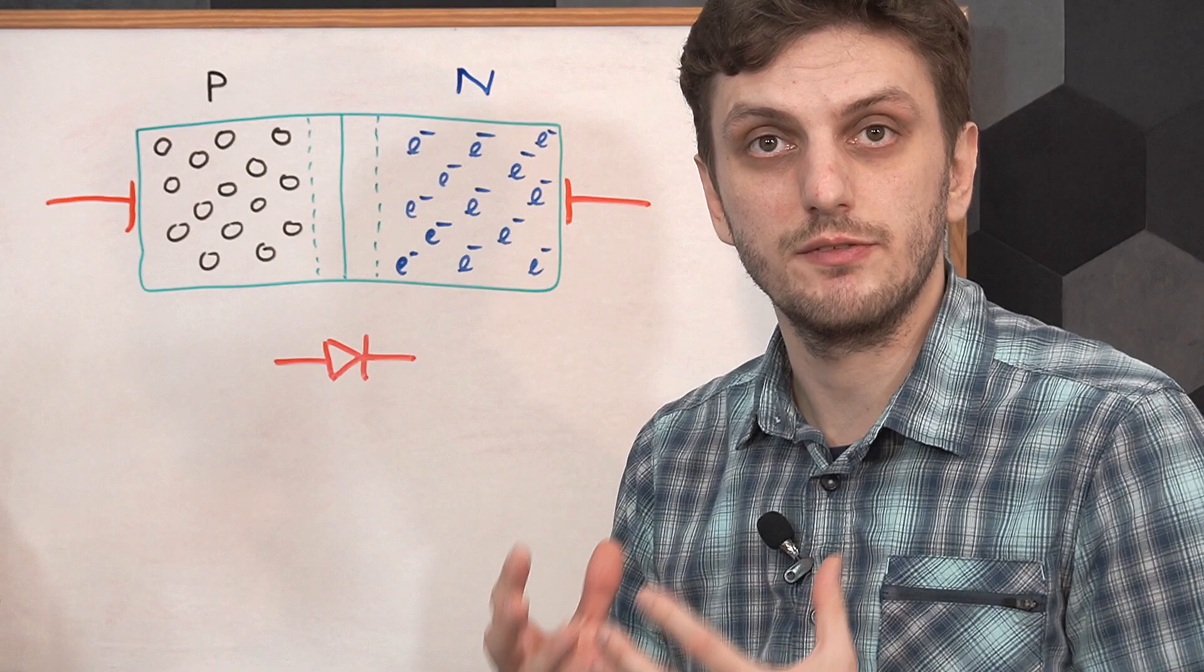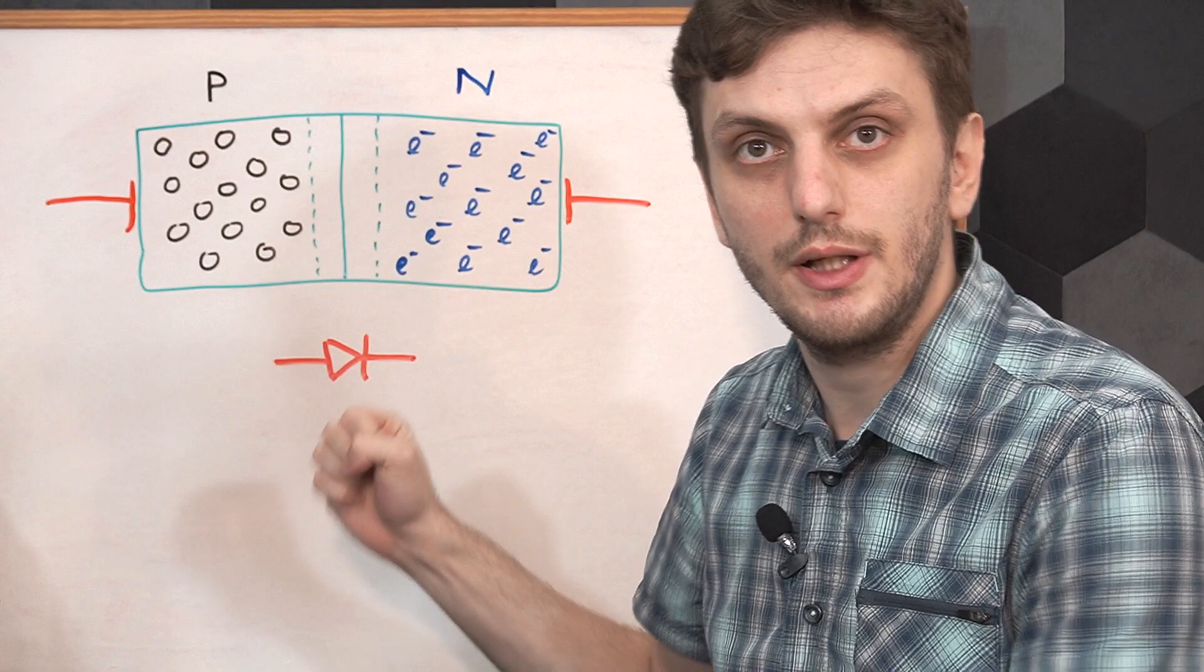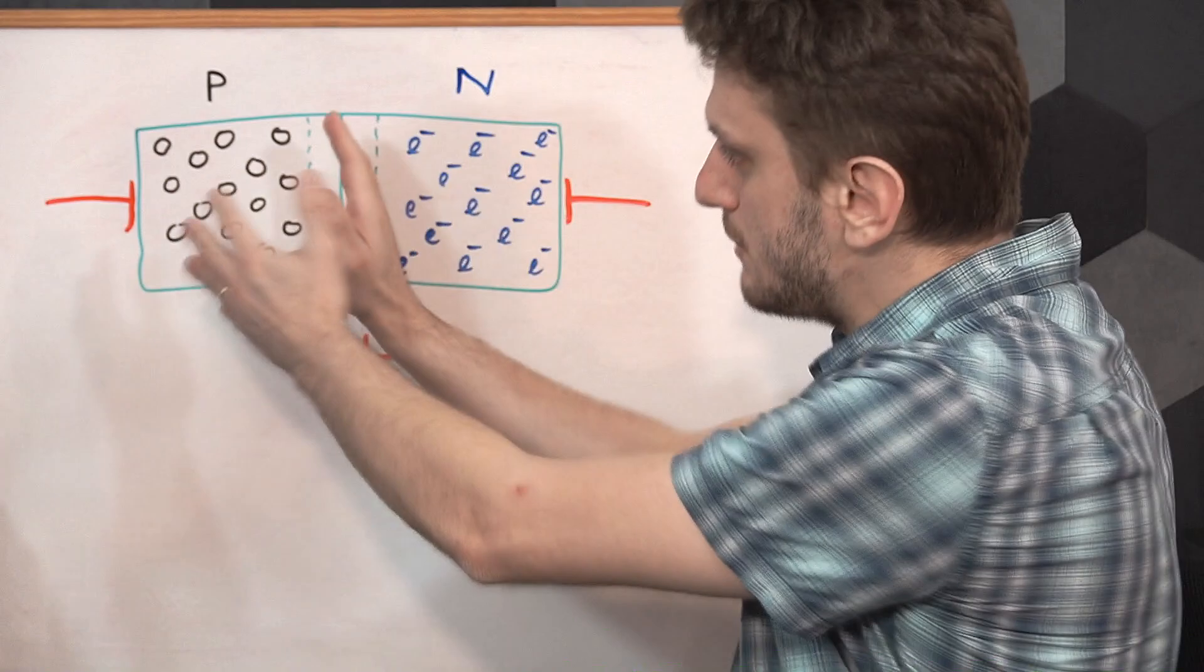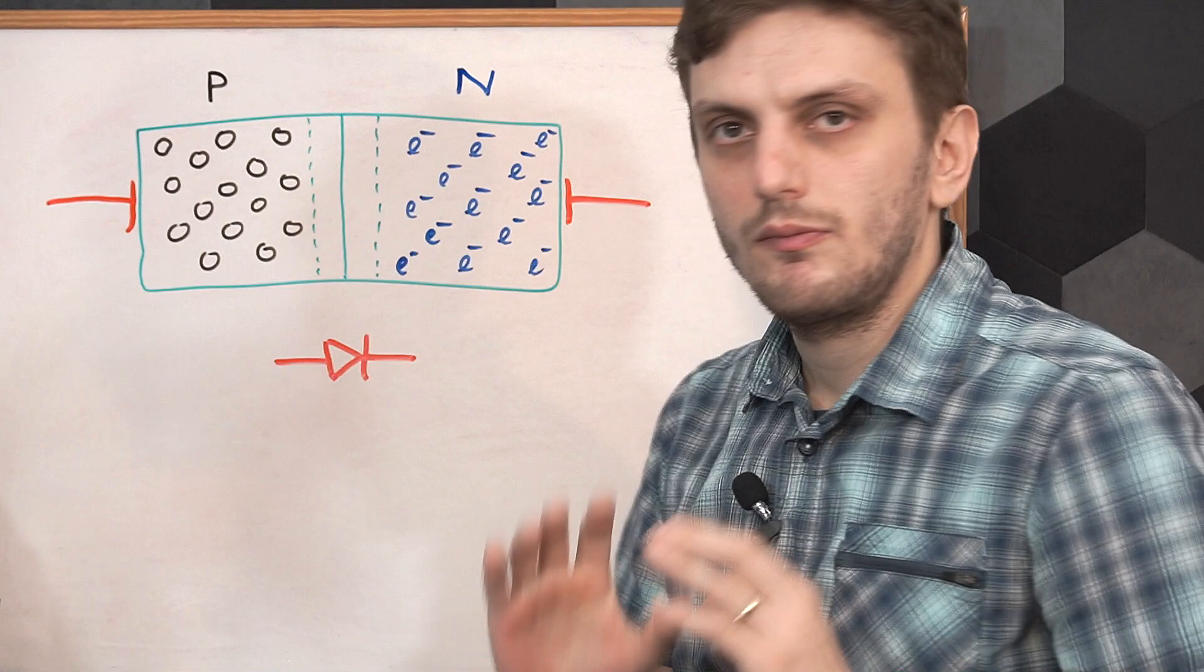So this is a device built from a block of semiconductor, usually silicon, that has a region doped with positive charge carriers, so the P region, and with negative charge carriers, the N region. Now, by themselves, the P and the N doped semiconductor are conductive. So you have a charge carrier, so it can be conductive. But put together like this, they become conductive only under specific conditions.